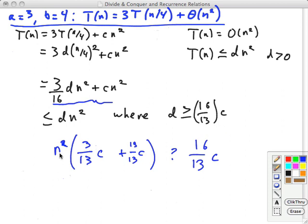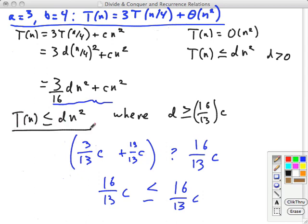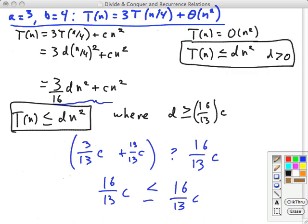So here we've got a total of 3 and 13. We've got a total of 16 thirteenths c's. And that indeed is less than or equal to 16 thirteenths c. And so we have shown that T of n is less than or equal to dn squared, which is the exact form of the hypothesis to be shown. We were claiming this, but that is equivalent to claiming this. And so that proves by substitution that the analysis is correct.